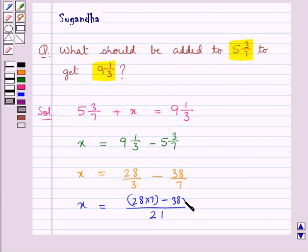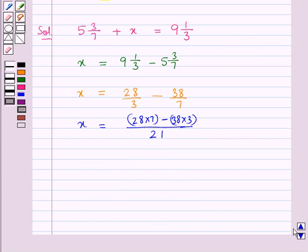So 38 multiplied by 3. From here we get x is equal to 196 minus 114 upon 21 or you can say that x is equal to 82 upon 21.